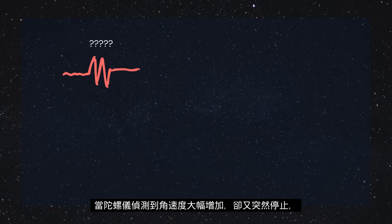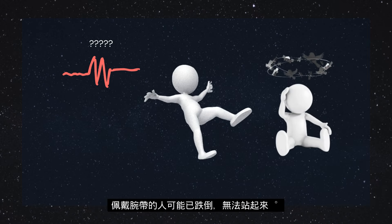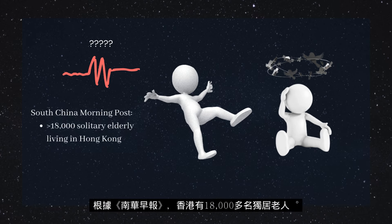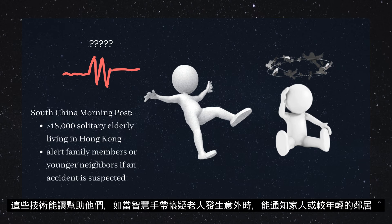When the sensors detect a huge increase in angular velocity which stops abruptly, perhaps the person has fallen and is unable to get up. According to the South China Morning Post, there are over 18,000 solitary elderly living in Hong Kong. Technology like this can benefit them by alerting family members or younger neighbors when the smart bands detect irregular movement and suggest that the elderly person is in an accident.